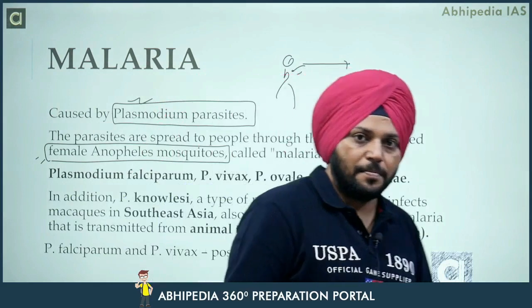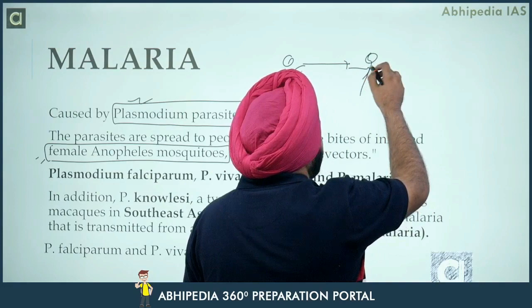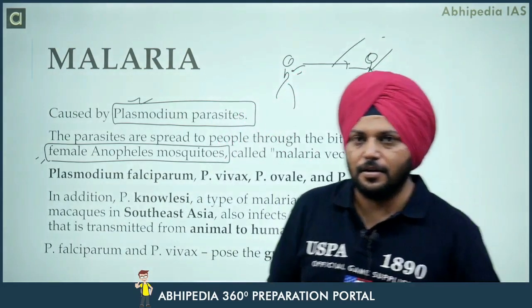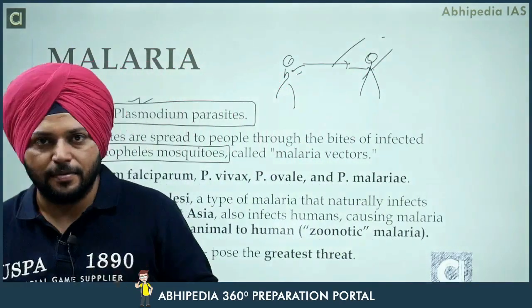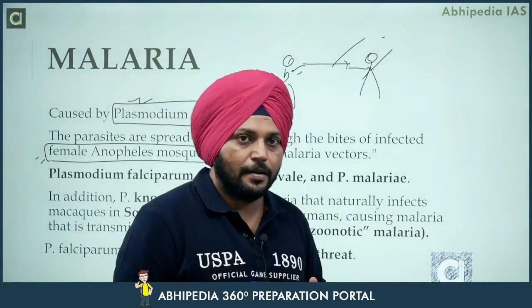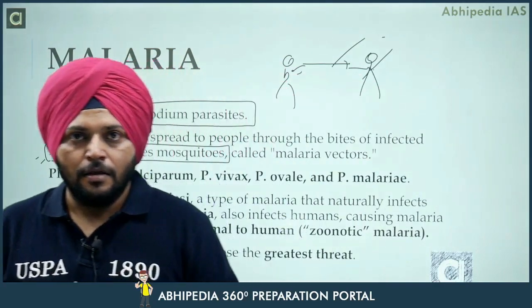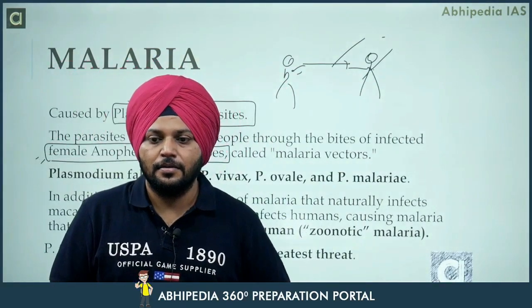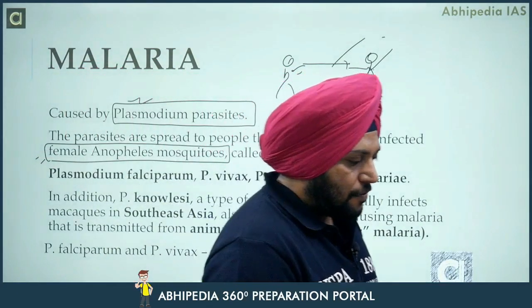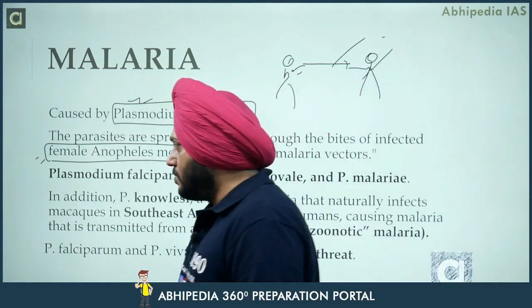The plasmodium enters the mosquito's blood. Then the mosquito goes and bites another healthy human being, transmitting the parasite. This is how it spreads across tropical regions. Malaria is caused by the plasmodium parasite, through the bites of infected female Anopheles mosquito.